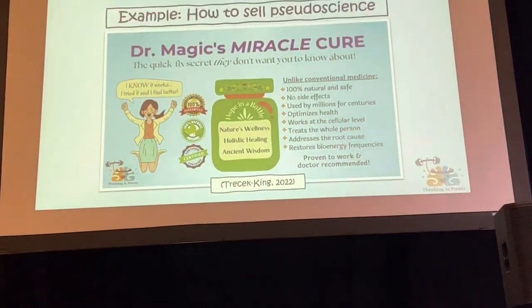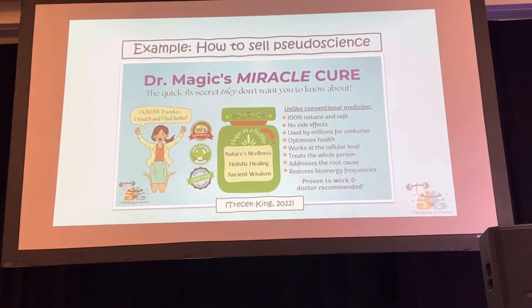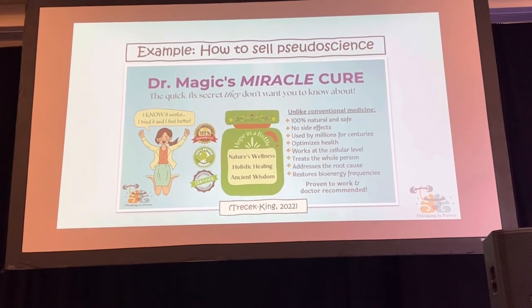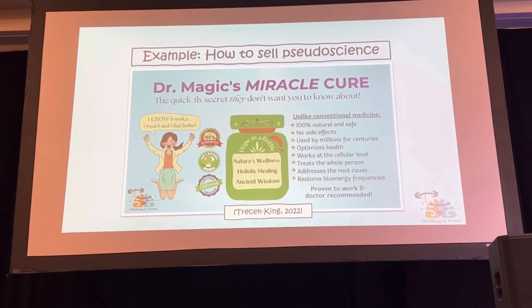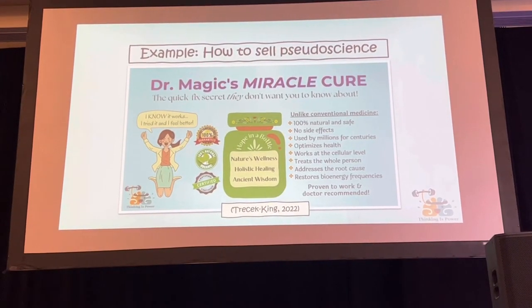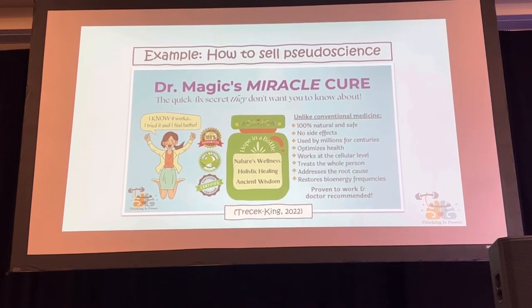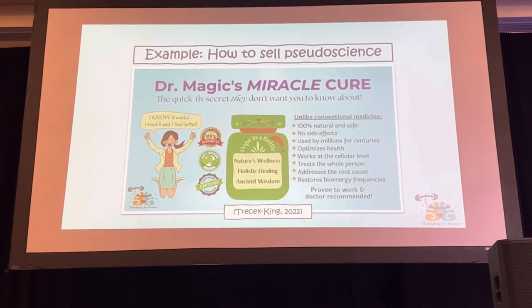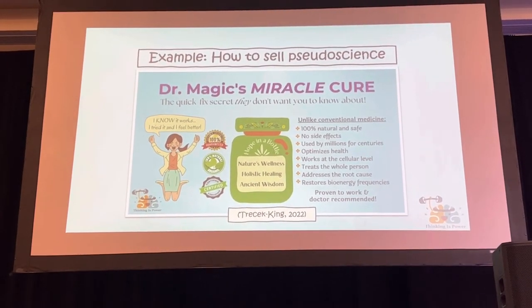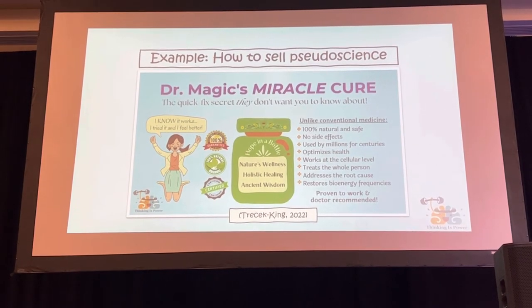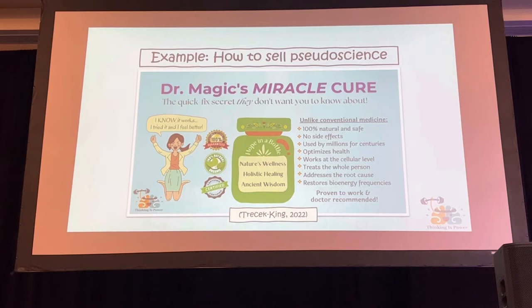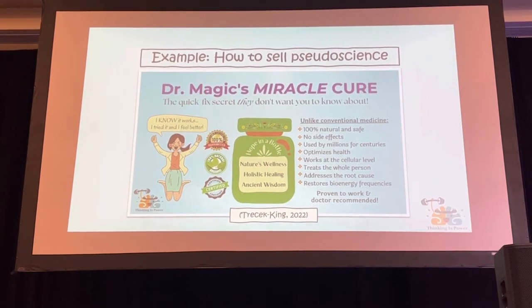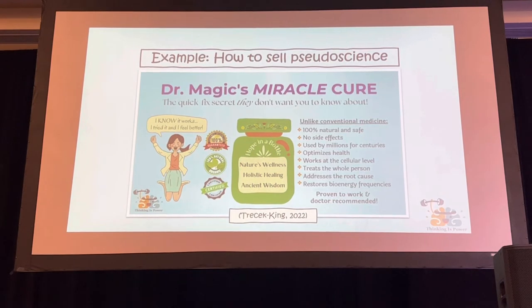I also teach them how to sell pseudoscience. I published this in the Skeptical Inquirer. This is an ad that I made to demonstrate the techniques. Things like unfalsifiable claims — my favorite is technobabble, like 'restores bioenergetic frequencies,' which doesn't mean anything. Appeal to anecdotes, make it authoritative, make it vague but really confident. Appeal to nature, always. Appeal to tradition. Appeal to the masses — these are all key logical fallacies. Conspiratorial thinking is good too: 'They don't want you to know about this.' And then I have students make their own ads.